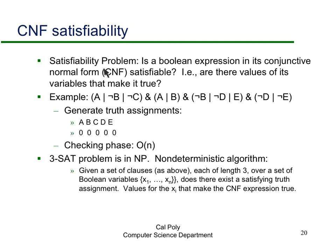In addition to general CNF satisfiability being NP-complete, there's something called 3-SAT, which is also NP-complete. In 3-SAT, each clause can be at most length 3. The reason to restrict to 3-SAT is that it's easier to reason about when individual clauses don't get too long.